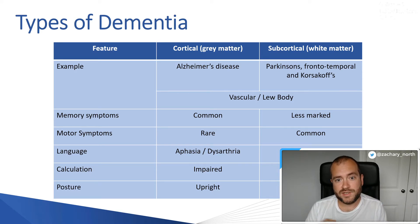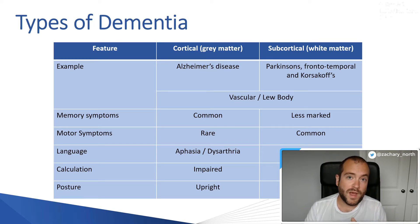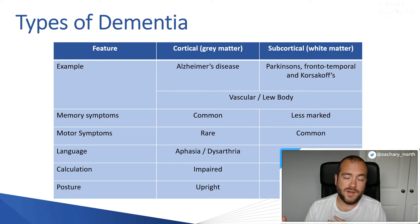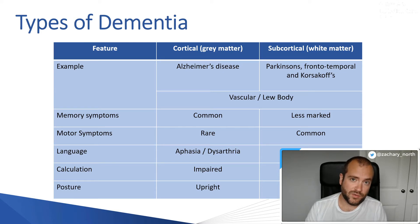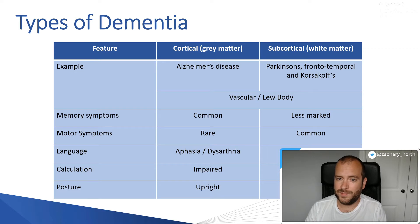On the subcortical side, a typical presentation is Parkinson's disease, where patients start off with motor disturbance because it's the white matter affected. They may get some speech problems, but also motor problems — typically starting with a tremor — and then progressing to problems with mobility and walking, developing the characteristic shuffling gait seen in Parkinson's.